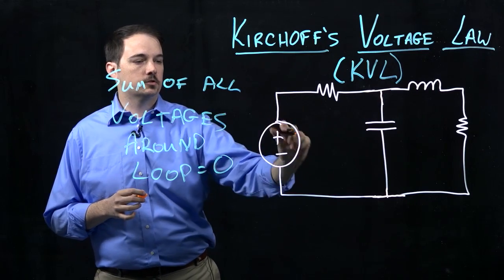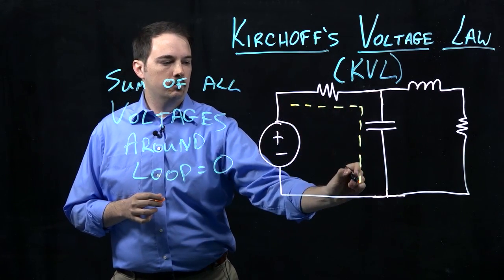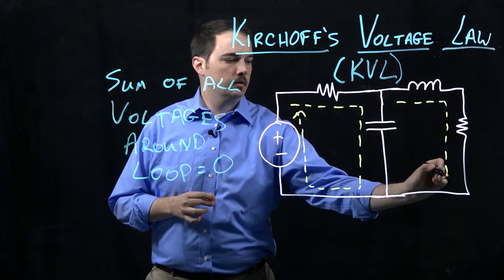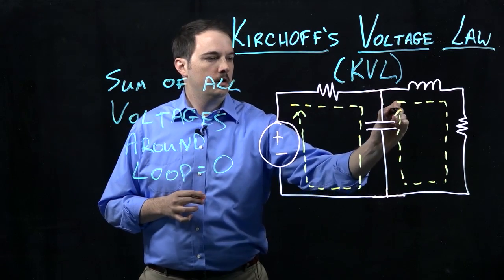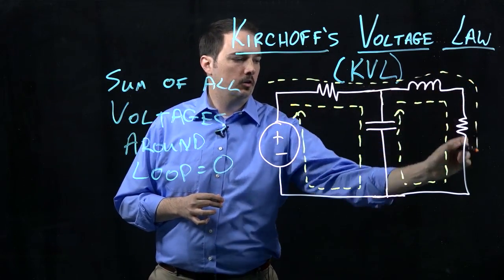And so with this very basic circuit that we have here, we could actually define three different loops. So one may be around the left side of the circuit here, one may be around the right side of the circuit here, and then actually I could also define a loop going around the entire circuit all the way around.